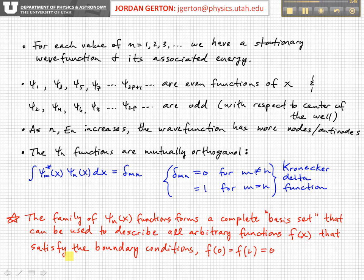So again, we went over this briefly last time. For each value of the quantum number n, which again is an integer starting at one, we have a stationary wave function and its associated energy. We have an eigenstate and an eigenenergy. The ones that are labeled with odd subscripts, one, three, five, seven, et cetera, are actually even functions of the position x, at least with respect to the center of the well. And the ones that are labeled with even subscripts, two, four, six, eight, et cetera, are odd. That is, they're antisymmetric with respect to the center of the well. So even means symmetric, odd means antisymmetric with respect to the center of the well.